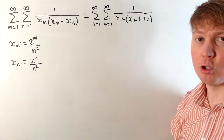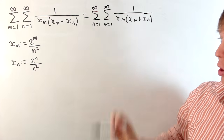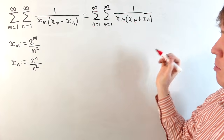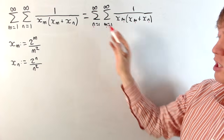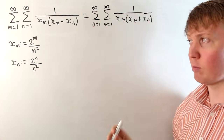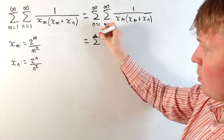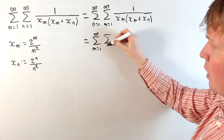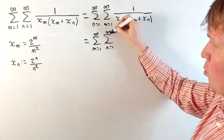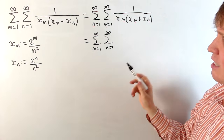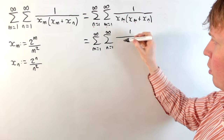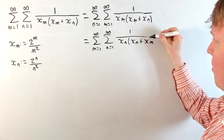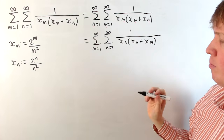We can rewrite this, just changing the order in which we're summing — summing the m terms before the n terms. Then we could swap the letters, because m and n are both just labels. We can replace each n by an m and vice versa, replacing the m's by n's. So we rewrite this as the sum from m equals 1 to infinity, the sum from n equals 1 to infinity, of 1 over xn times xn plus xm — just swapping the roles of m and n.